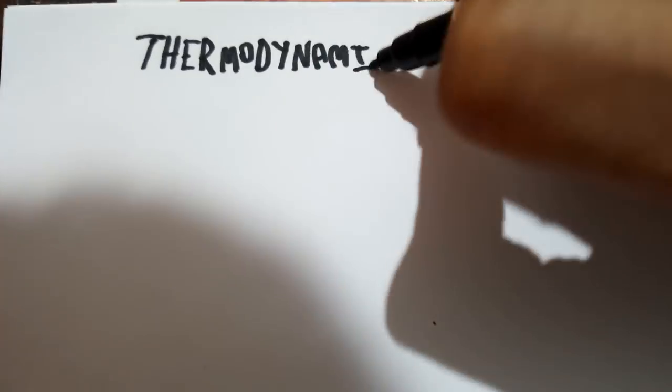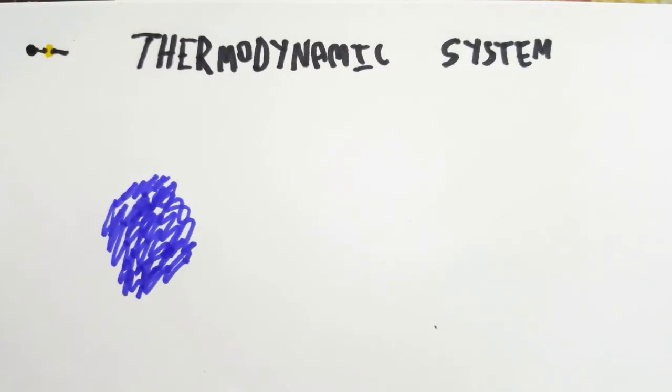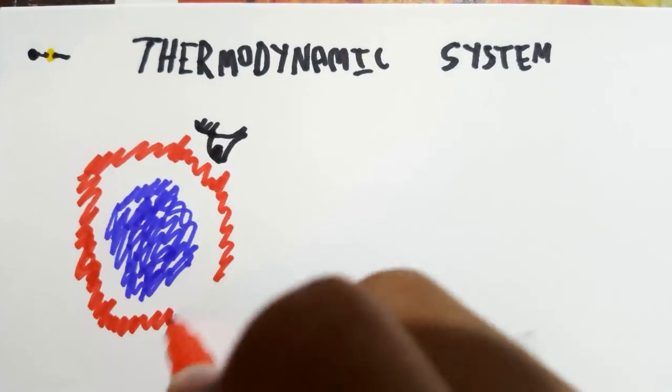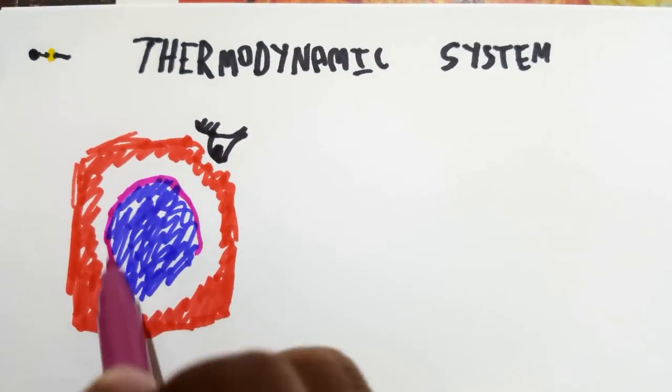A thermodynamic system is defined as a region of space upon which attention is focused. The system is separated from the surroundings by a boundary which classifies the system into: